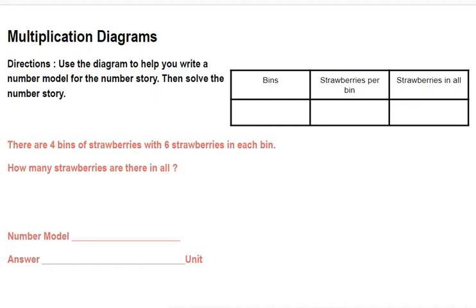Well, let's fill out that diagram to help us. There are four bins of strawberries. Okay, I'm writing in the number four. With six strawberries in each bin, strawberries per bin, six.